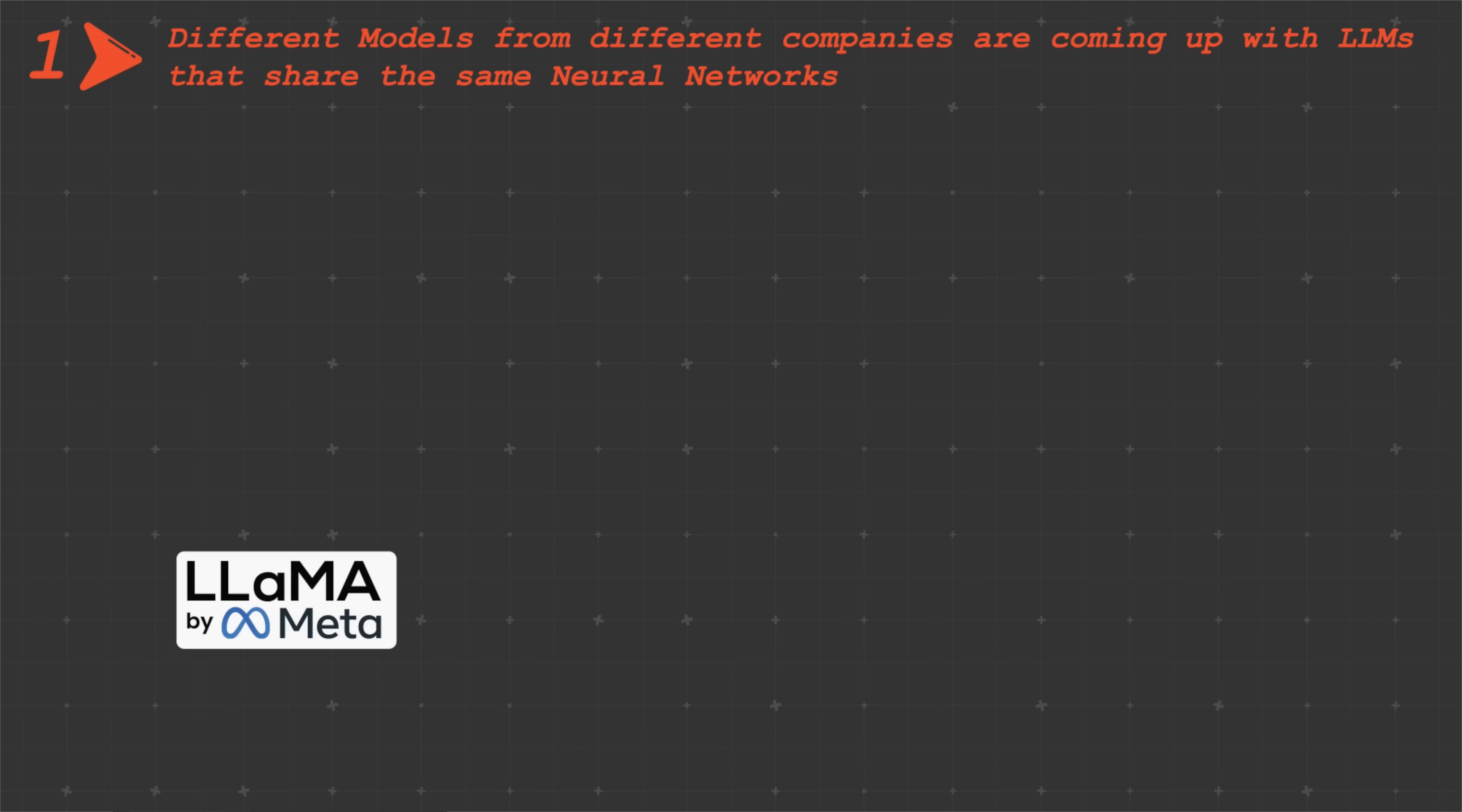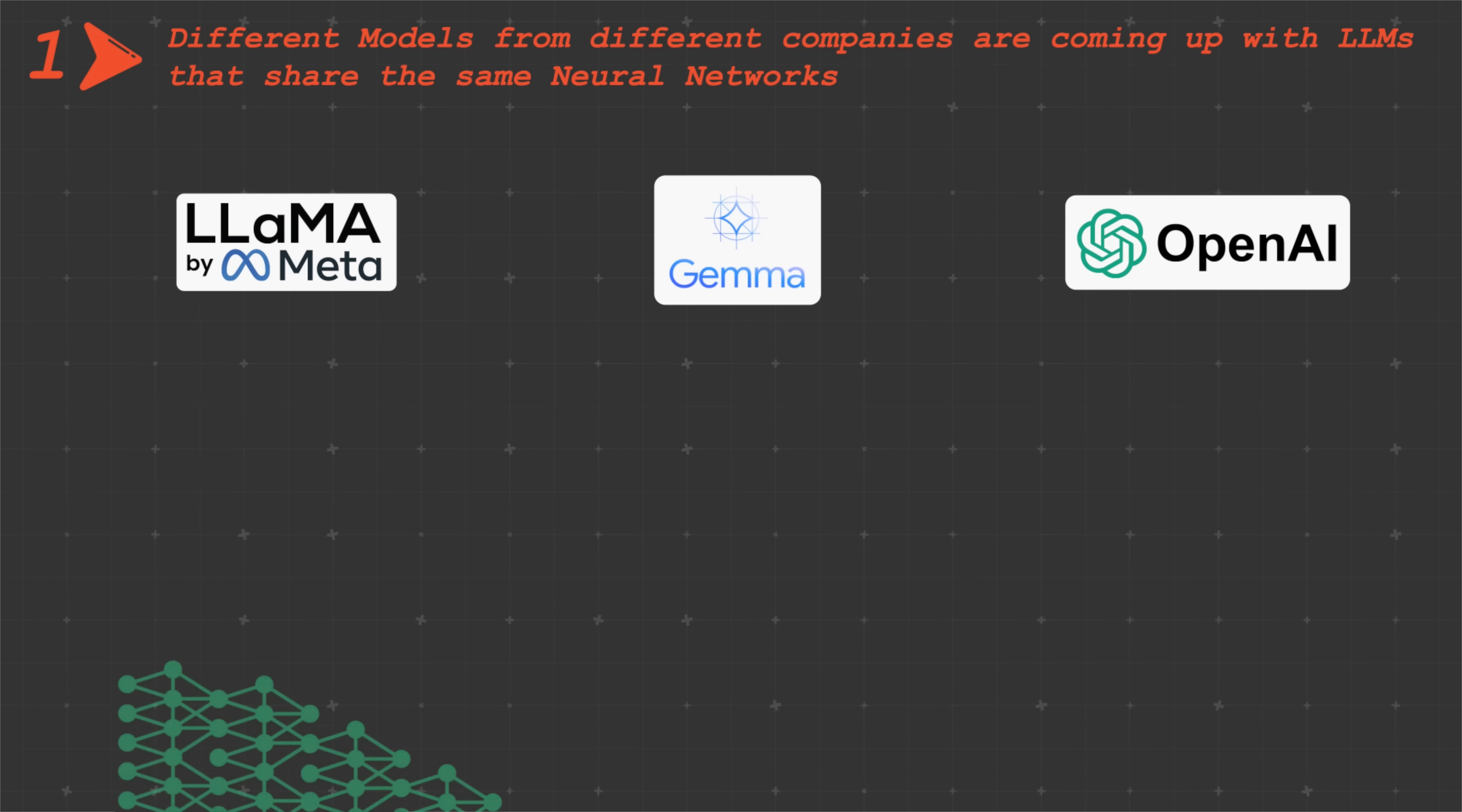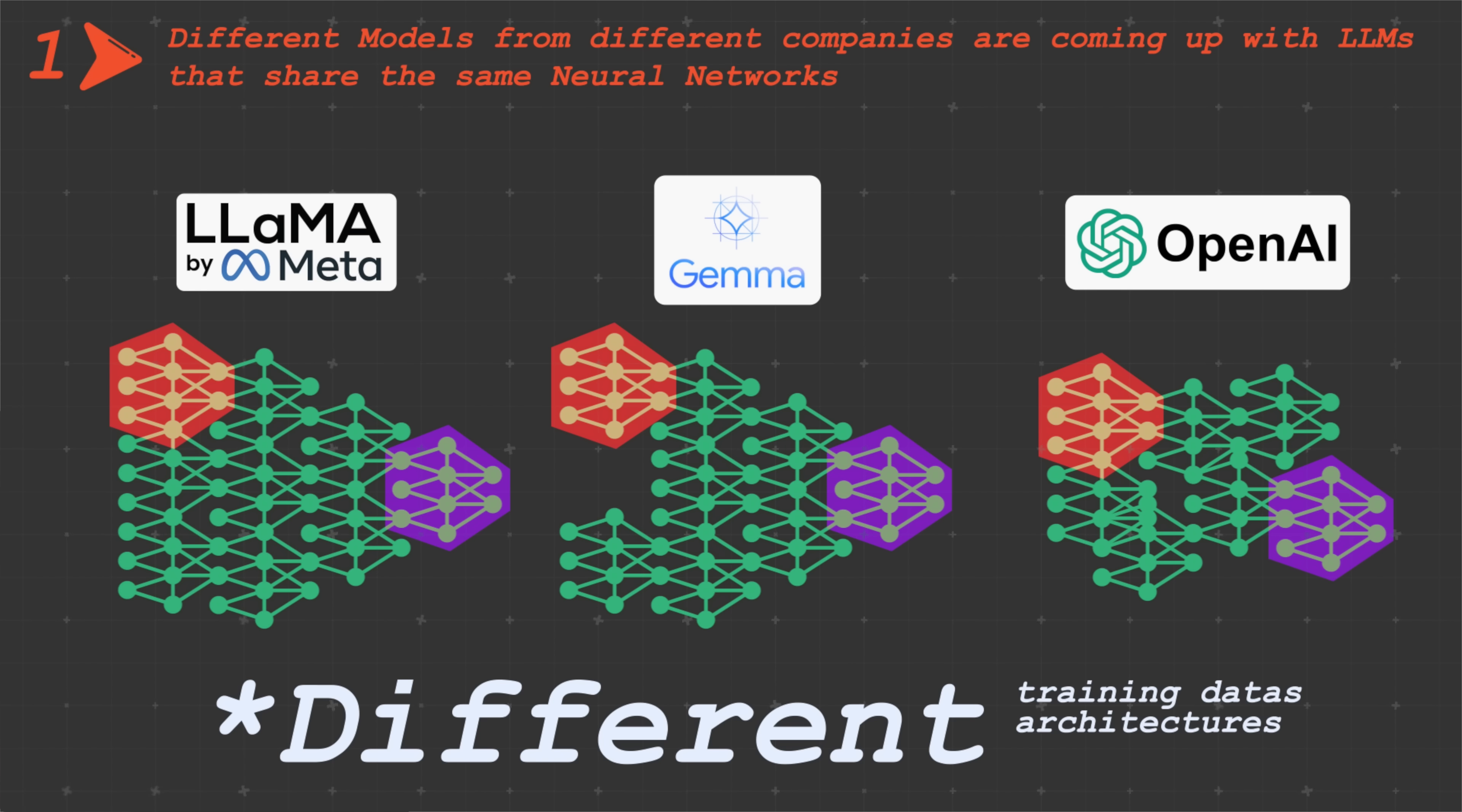So the first thing which helps validate this hypothesis is that different models from different companies where you have different engineers, different people with different ideologies are coming up with large language models that share the same neural networks. So you take LLaMA, you take Gemma from Google, you take OpenAI, and if you lay out the neural network, you will see some components of these neural networks matching each other. Despite the training data being different, despite the architectures being different, despite their researchers being different, some of the neurons, some of the sub-graphs you can imagine are common.